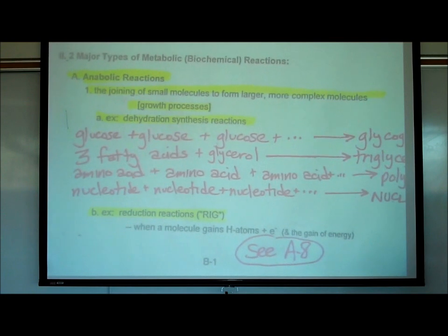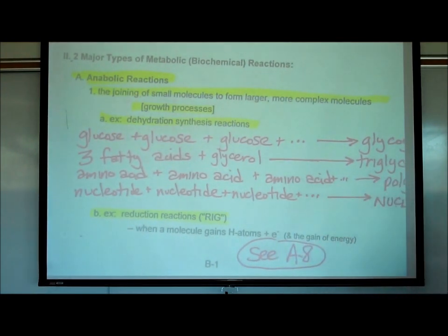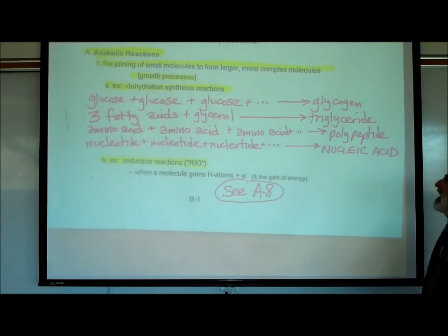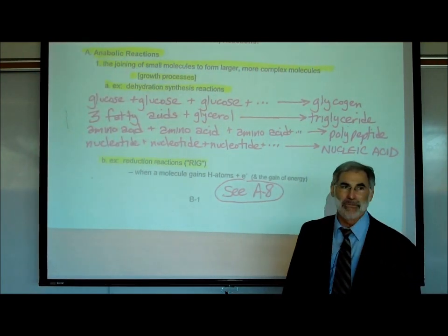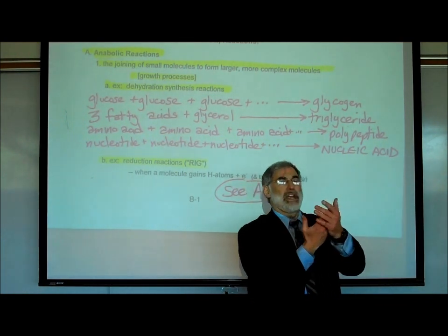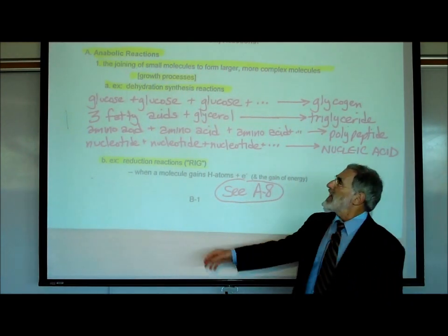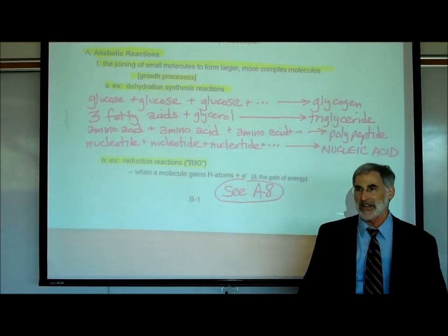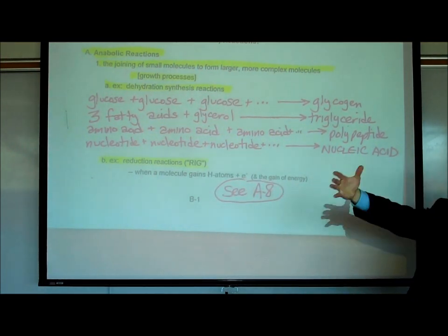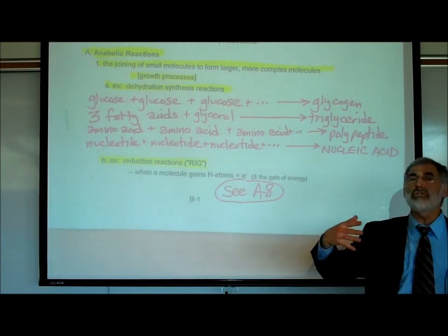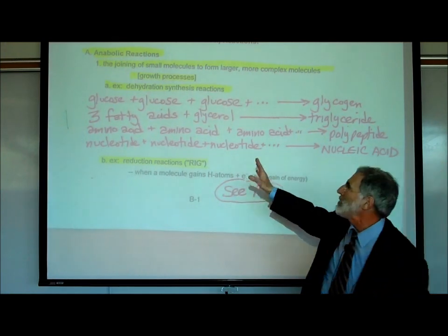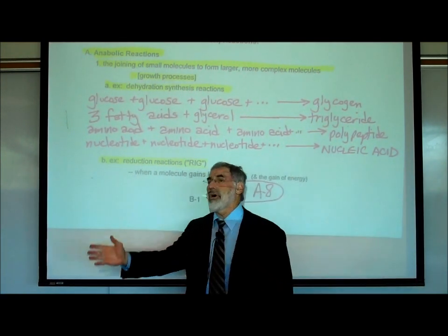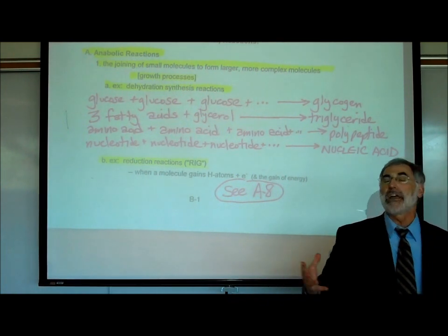Back on page B1 — there are different types of anabolic or growth reactions. Among the most important we've already covered are dehydration synthesis reactions. Dehydration synthesis is when we join organic molecules together by removing water. That's how sugars are joined together to form disaccharides and polysaccharides. When you join a whole bunch of glucoses together, you form a large polysaccharide called glycogen — that's a growth process: forming a large complex organic molecule from smaller sugar molecules.